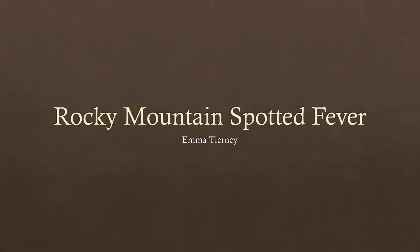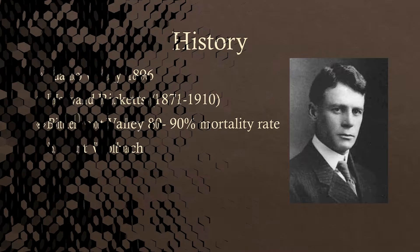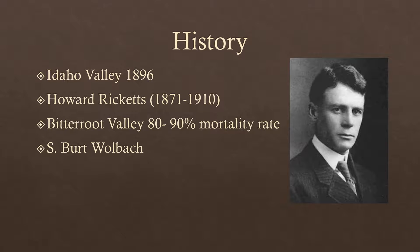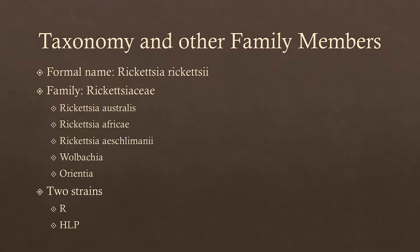My name is Emma Tierney and I will be presenting on Rocky Mountain Spotted Fever, which comes from the bacteria Rickettsia rickettsii. It originally emerged in the Idaho Valley in 1896 and was researched by Howard Ricketts, who isolated the organism right before he died of typhus. He was known to inject himself with the things he was studying, and it's thought he injected himself with typhus and died of that. By the time of his death, the disease had spread to the Bitterroot Valley in Montana with an 80-90% mortality rate. Simeon Bert Wolbach then picked up Ricketts' research and isolated the intracellular bacterium Rickettsia rickettsii, from the family Rickettsiaceae.